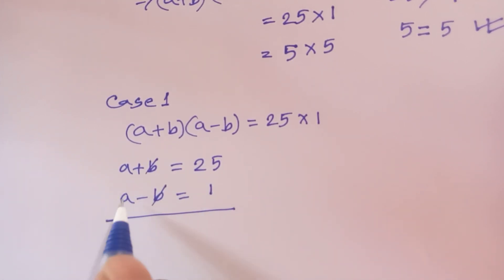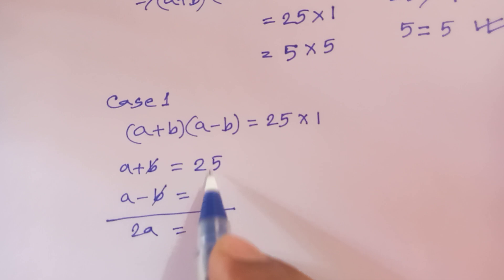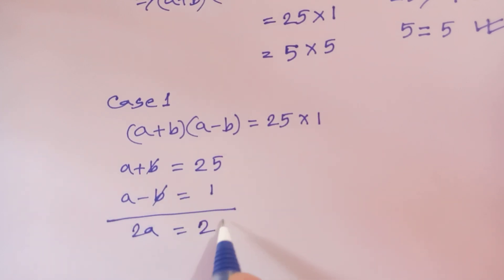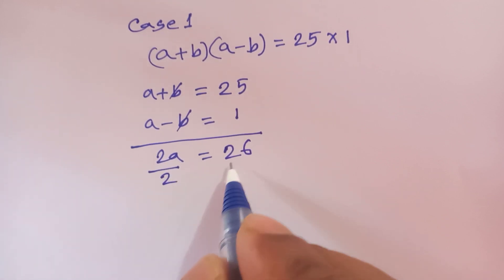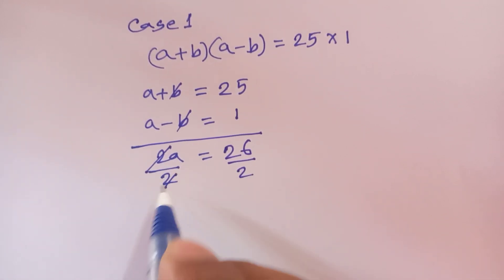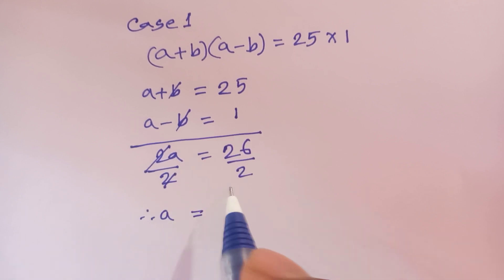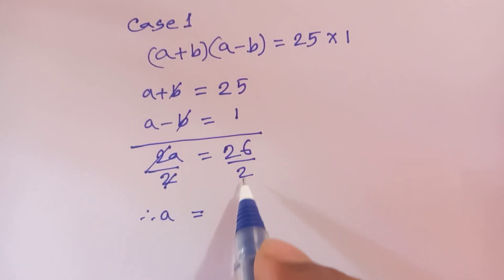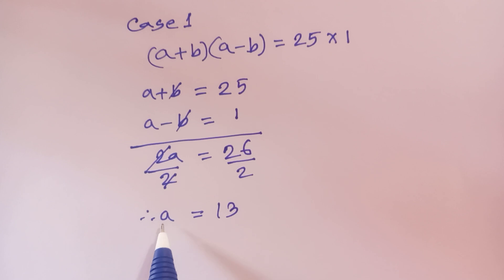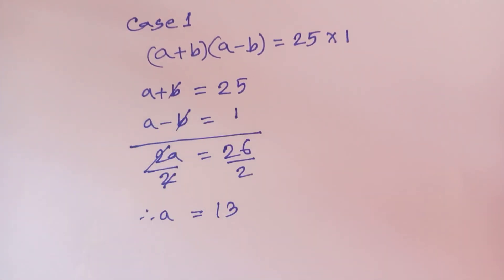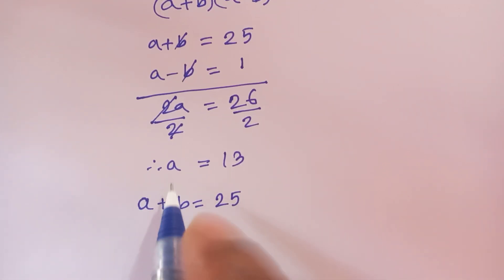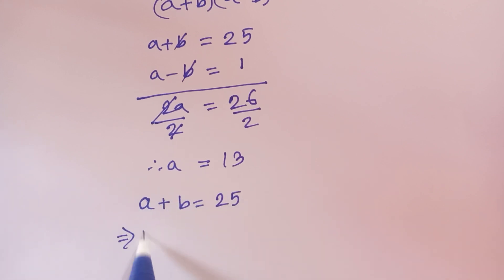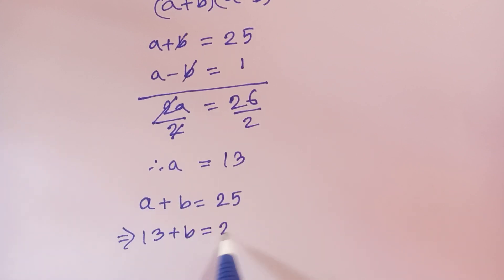Adding both equations, the B terms cancel out, giving 2a equals 26. Dividing both sides by 2, we get a equals 13.